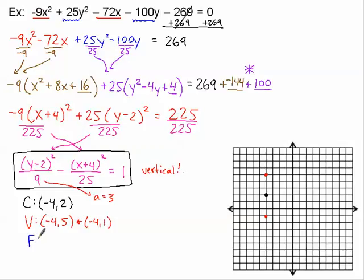My focal points are my foci. I need the value of c. And c is the square root of 9 plus 25. So that means that c is the square root of 34. So that means c is approximately, from my calculator, 5.8.